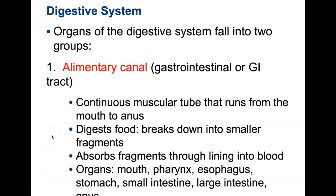When we talk about the digestive system, we also have to talk about the alimentary canal. This is probably a new word for you. The alimentary canal is everything from the mouth to the anus — a muscular tube that runs from the mouth to the anus. We're going to see food digested and broken down into smaller fragments, absorb those fragments, and go through each of these organs used in the digestive system.